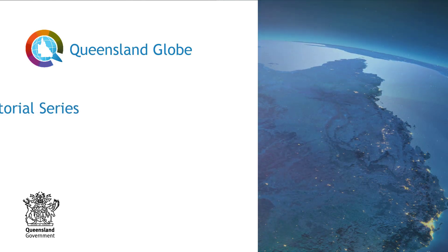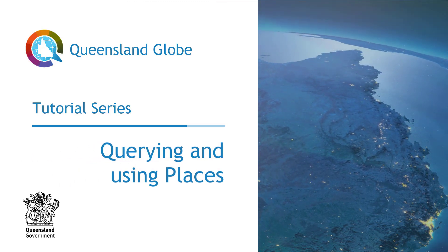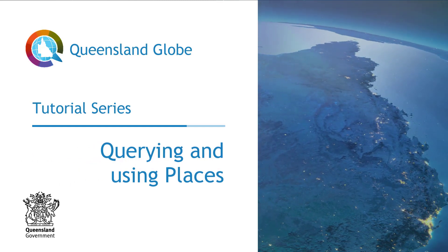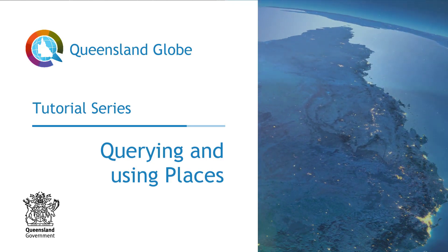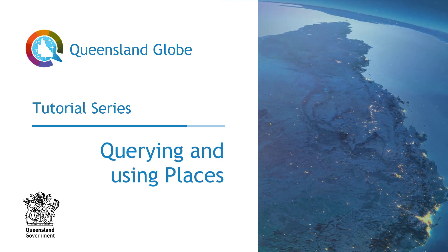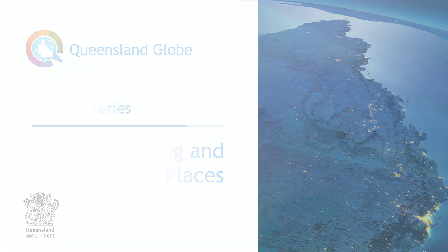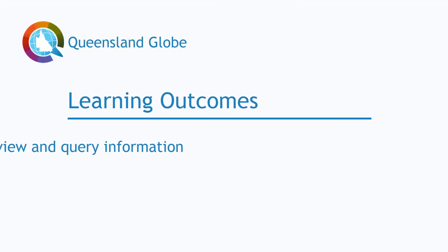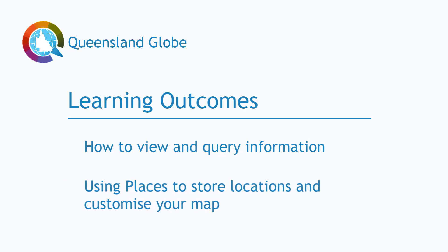Welcome to the third in a series of tutorials designed to enable you to use the Queensland Globe with confidence. In this tutorial we will look at ways to view and query information associated with many of the data layers in the Queensland Globe. We will also talk about the concept of places as a way to store locations and customise your map. The learning outcomes are an understanding of how to view and query specific information, and the ability to use places to store locations and customise the map.